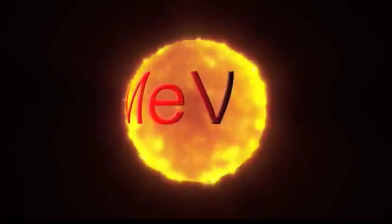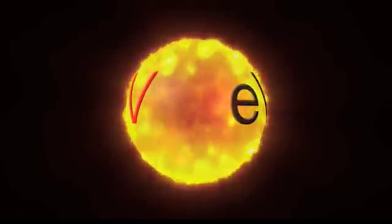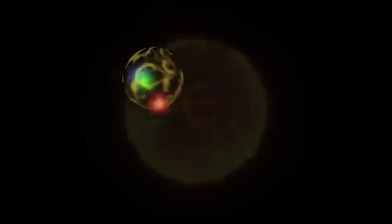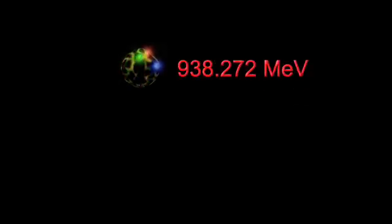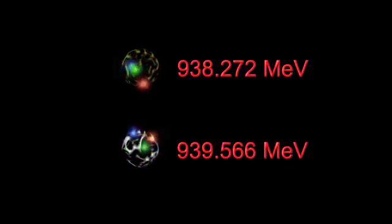Using these units, here are some facts that will come in handy. The rest mass of the proton is 938.272 MeV. The rest mass of the neutron is 939.566 MeV.